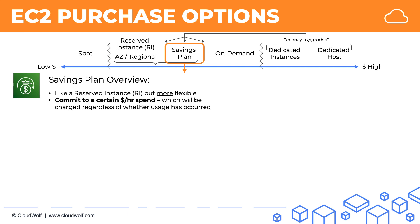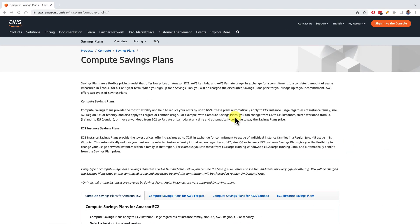In a savings plan, you commit to a certain dollar per hour spend, which will be charged regardless of where the usage has occurred. Products have a discounted savings plan rate, which depends on your selected options. So let's have a quick look at this discount rate.